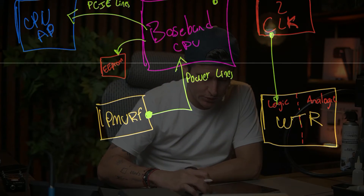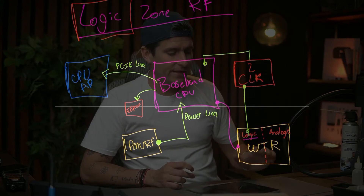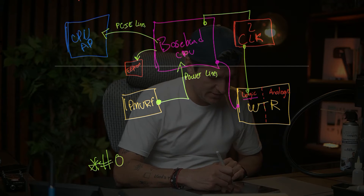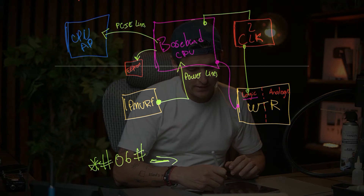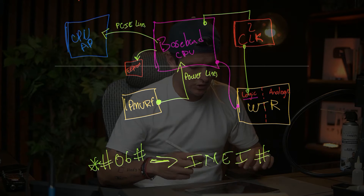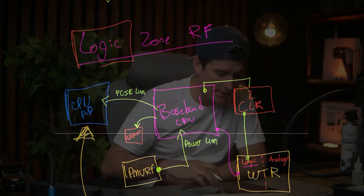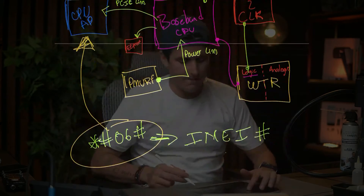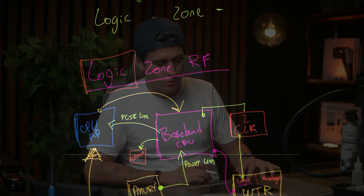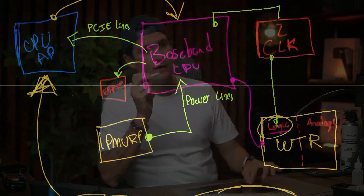The WTR logic part is working. So if we have the logic part working, that means when we dial *#06# on the phone, the phone sends you the IMEI. That's because you're asking your CPU 'what is my IMEI?' and then the CPU asks the baseband. When you dial this and get the IMEI, it's because you have the logic part working — so you don't have to do anything with the baseband, the PMURF, the EPROM, the logic part of the WTR, or the clocks.